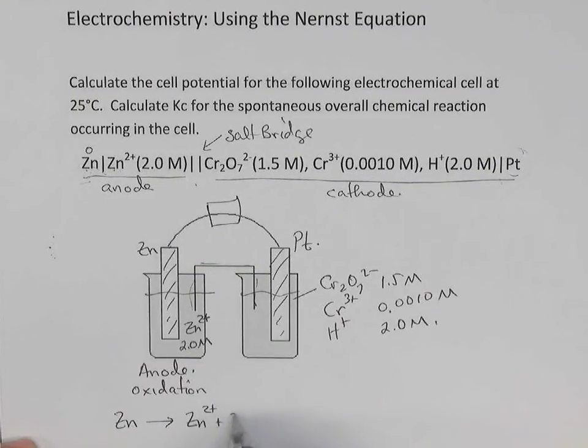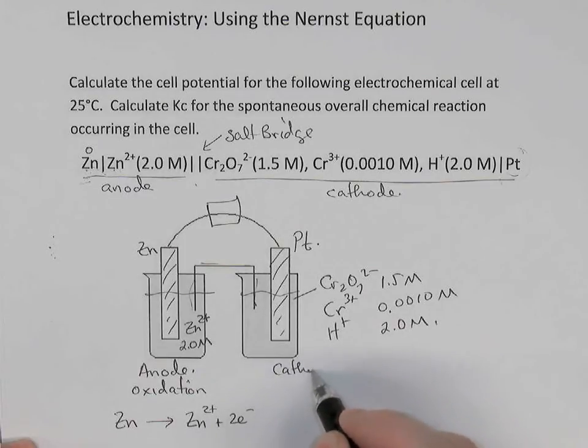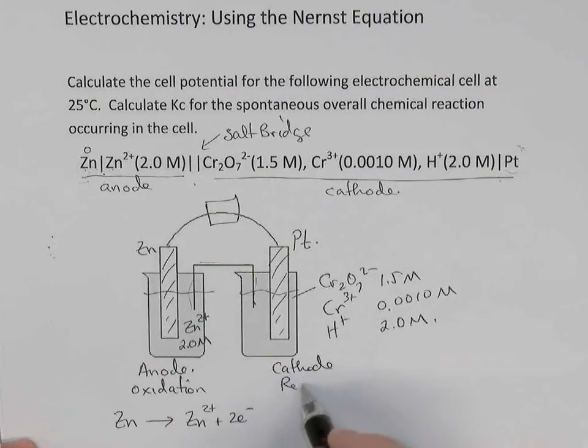And to balance it, we'll just put two electrons on the right-hand side. At the cathode, we have reduction happening.